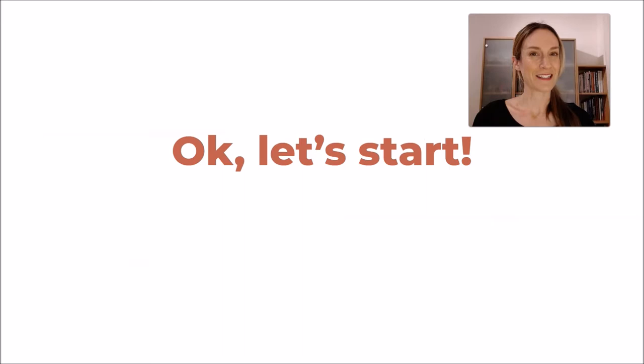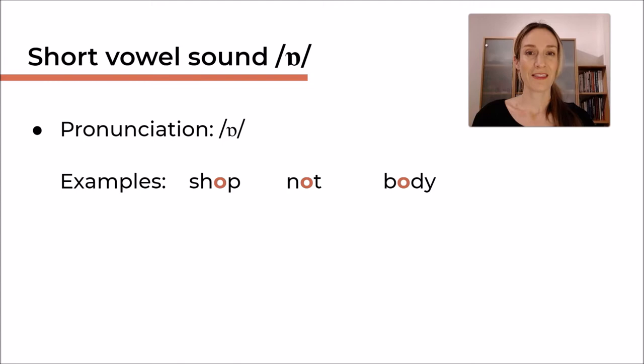First of all, we're going to have a look at the vowel sound /ɒ/. Now this is a short vowel sound. You can see that because there are no two dots to indicate that it's long, and the pronunciation is /ɒ/. For example, as in shop, not, body. I'm sure you've seen these words before. They're quite simple, all spelled with an O and the sound is /ɒ/.